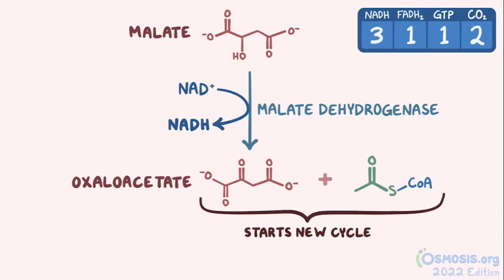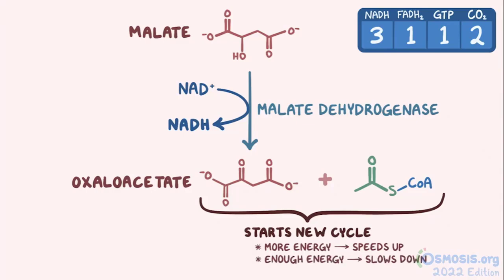The control of the citric acid cycle is based on the energy level of the cell. It has to run all the time — when it needs more energy, it speeds up, and when it has enough energy, it slows down. Hormones don't play a role in its regulation.